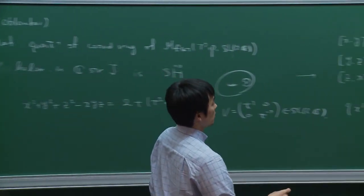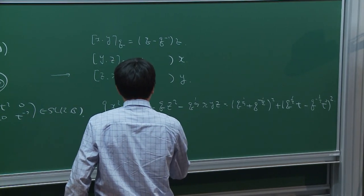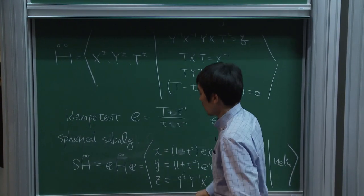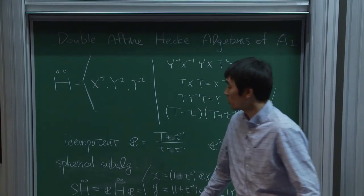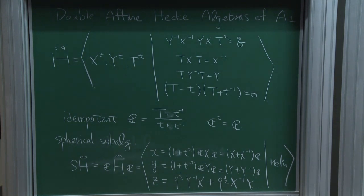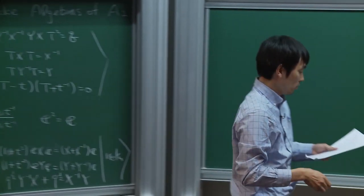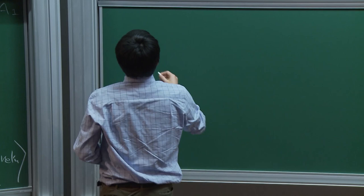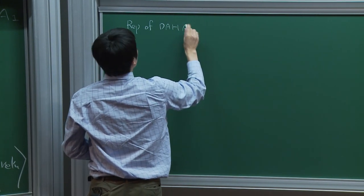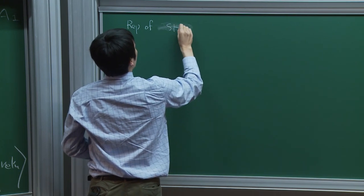This algebra is exactly the deformation quantization of this hypersurface, and it is called the spherical Double Hecke Algebra. Its relation to the full Double Hecke Algebra is given by the relations on the board. I want to study the representation theory of this algebra in terms of the geometry of the moduli space of flat connections.